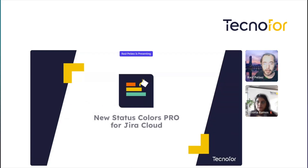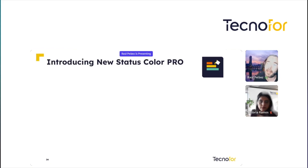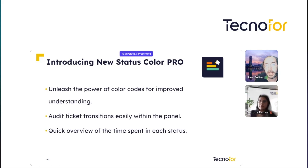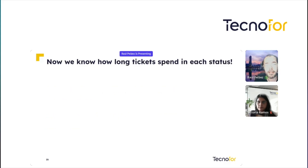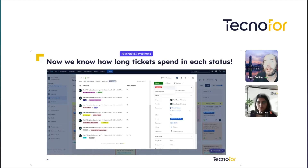Now I will tell you about New Status Colors Pro for Jira Cloud. It's our plugin and it's super interesting for colorizing statuses. With New Status Colors Pro, you can unleash the power of color codes for improving understanding. But that's not all — you can audit ticket transitions easily within the panel, and you can know the time spent in each status. This is very useful data for all persons who use Jira. Now we can know how long tickets spend in each status.